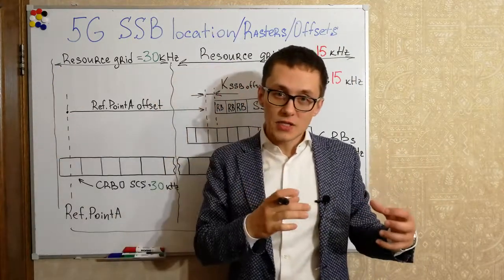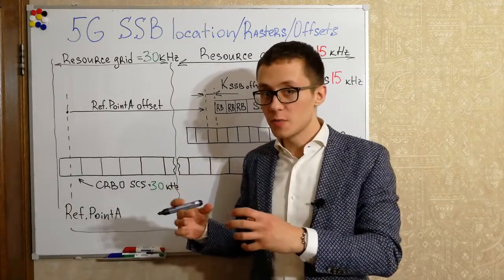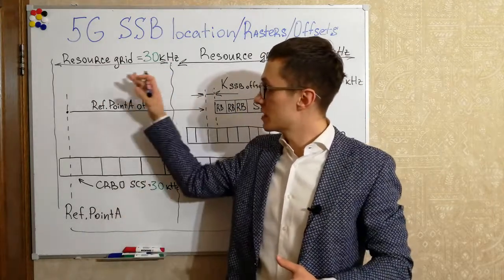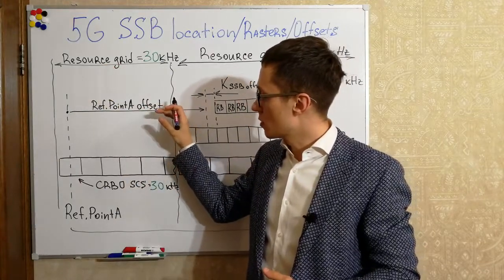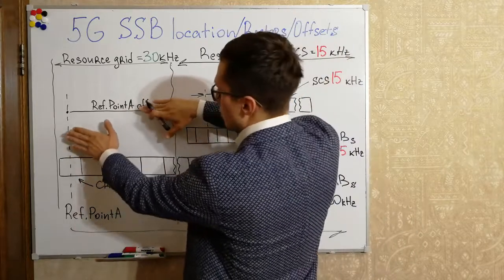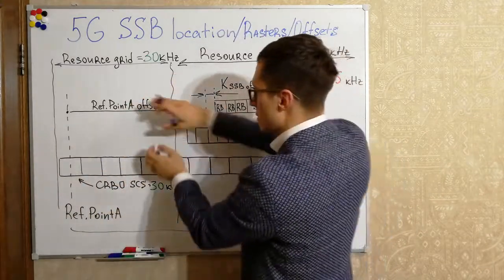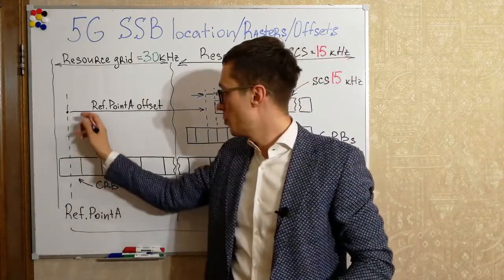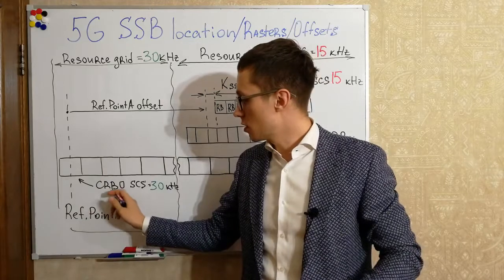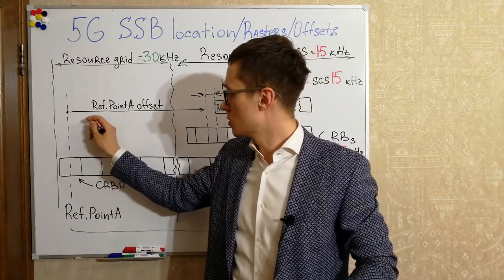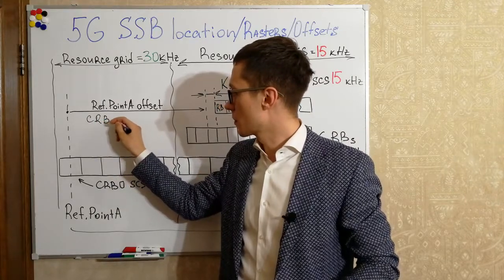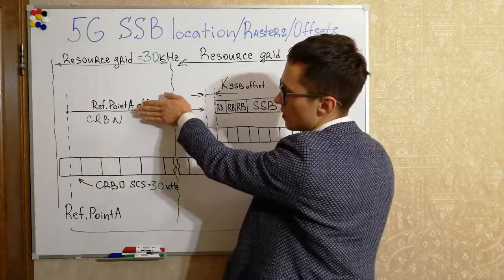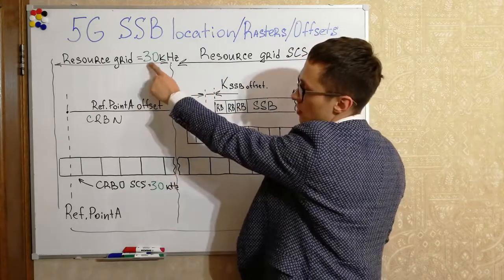In the case where the SSB has the same subcarrier spacing — the same resource grid with 15 kHz subcarrier spacing as the cell — we will only have the reference point A offset. For example, the SSB block is located here and there will be only one reference point A. Reference point A can be counted in common resource blocks — for example, counting the common resource blocks from reference point A to the SSB block.